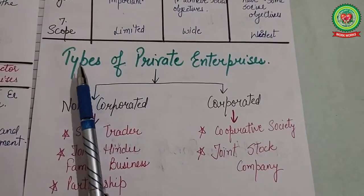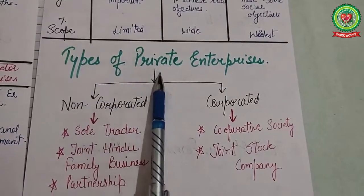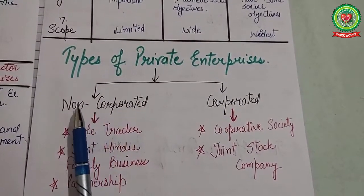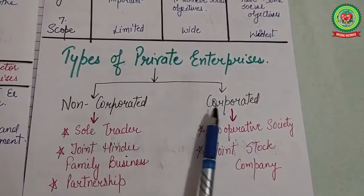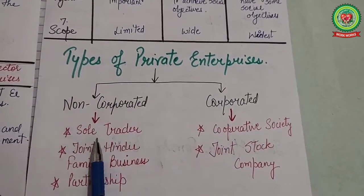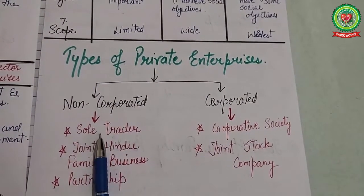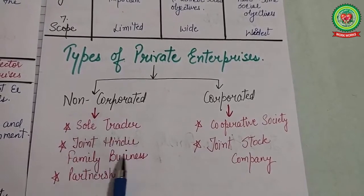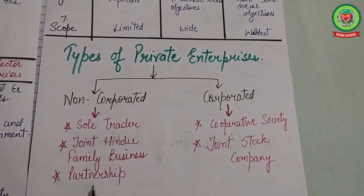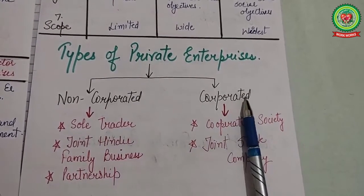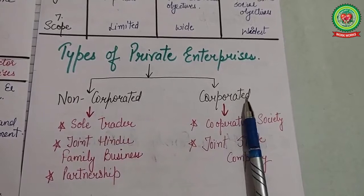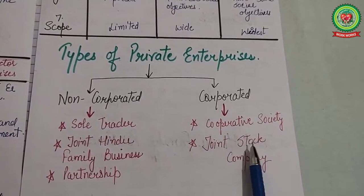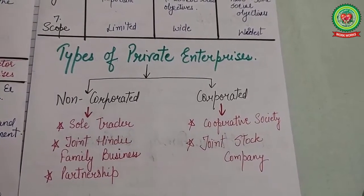Next are the types of private enterprises, which are of two types: non-corporated and cooperative. Non-corporated are further of three types: sole trader, joint Hindu family business, and partnership. Corporated are of two types: cooperative societies and joint stock company.